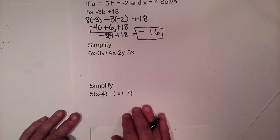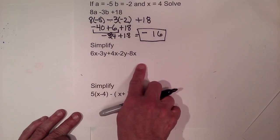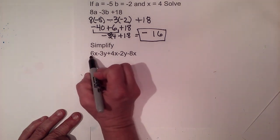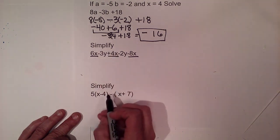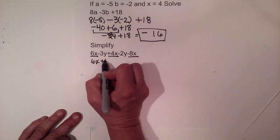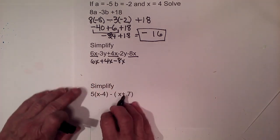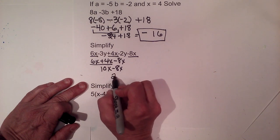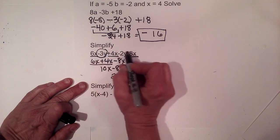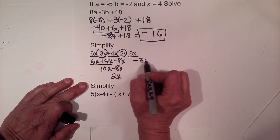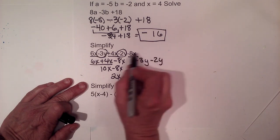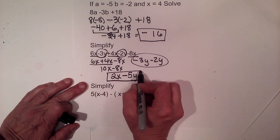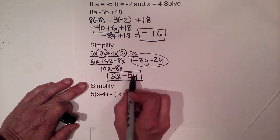Now let's look at simplifying by combining like terms. We have groups of x's and y's. Underline the x's: six x plus four x minus eight x. Combining gives ten x minus eight x, which is positive two x. Circle the y's: negative three y and negative two y — same sign, add and keep the sign — gives negative five y. The final answer is two x minus five y; we cannot combine them because the variables are different.